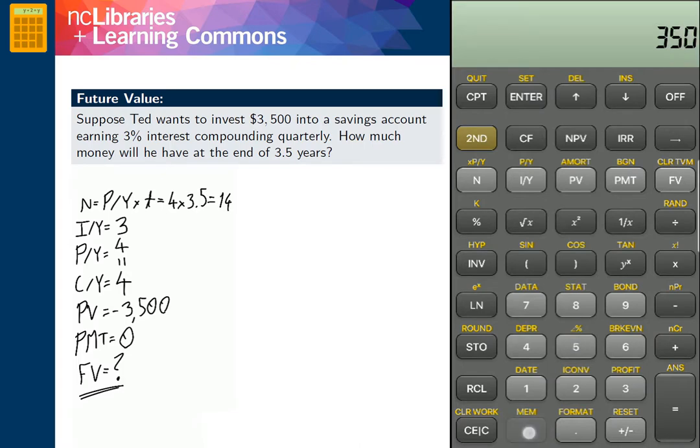Now we are ready to enter our present value, 3,500. Remembering that this is an investment and we will enter it as a negative number. We will press the PV button.